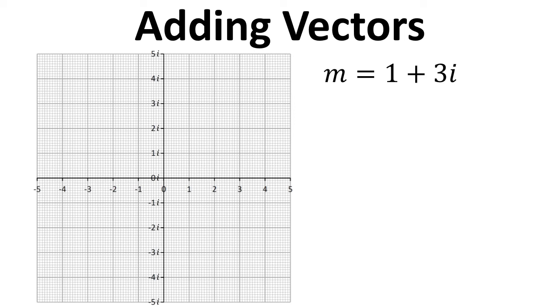So if we have vector m as 1 plus 3i and vector n as 4 plus 2i, we can add these up using the complex numbers.